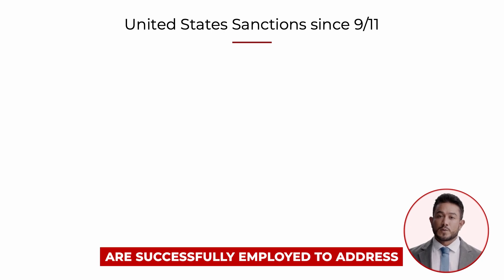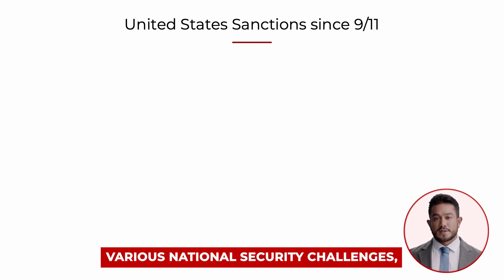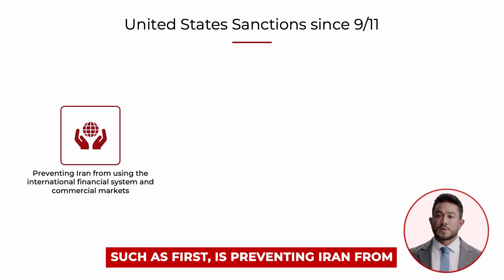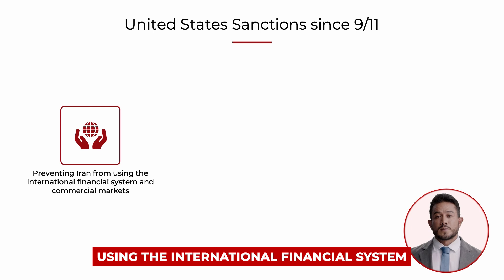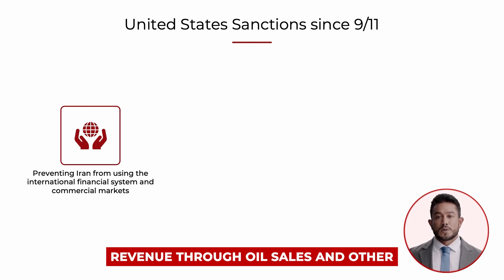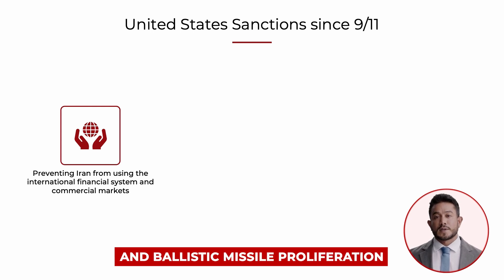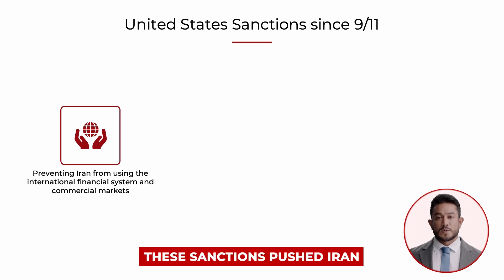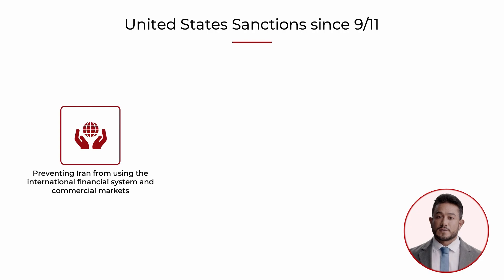Over 20 years, different sanctions have been successfully employed to address various national security challenges. First is preventing Iran from using the international financial system and commercial markets to generate revenue through oil sales and other activities that support its nuclear and ballistic missile proliferation and support for terrorist activities. These sanctions pushed Iran to the negotiating table on its nuclear program in 2015.